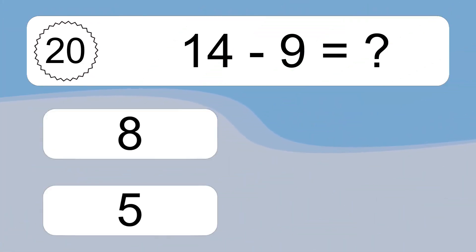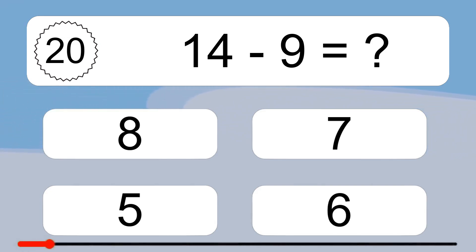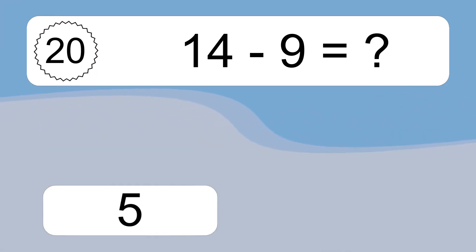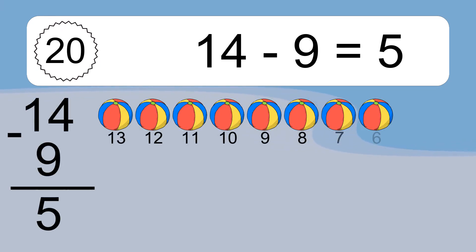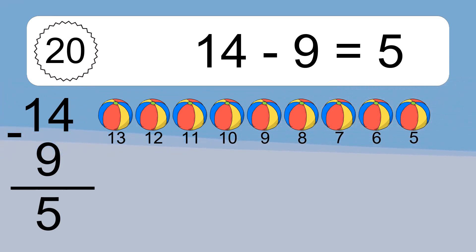14 minus 9 equals what? 14 minus 9 equals 5. Let's count it: 13, 12, 11, 10, 9, 8, 7, 6, 5.